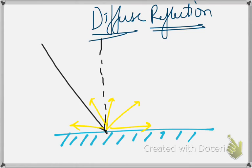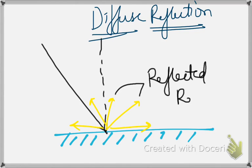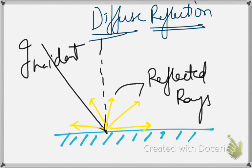These are all reflected rays. This is the incident ray and this is the normal. A single light source can fall on a surface and scatter itself. The reflected ray is not a single ray, but it is scattered. This kind of reflection is called diffuse reflection because the light here is getting diffused.